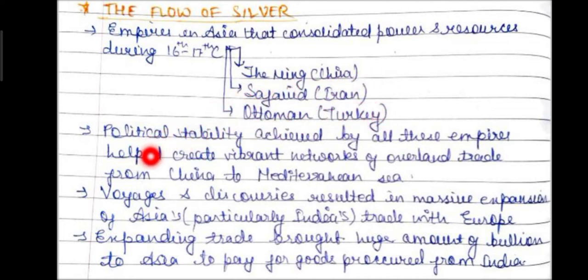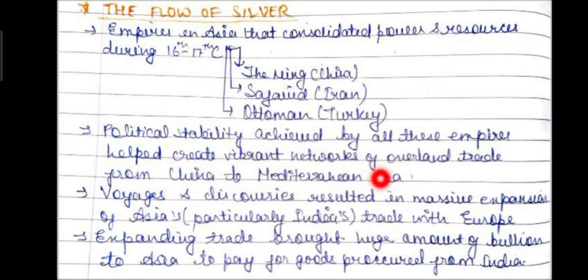The political stability achieved by all these empires helped create vibrant networks of overland trade, stretching from China to the Mediterranean. This enabled strong trading connections across the empires.